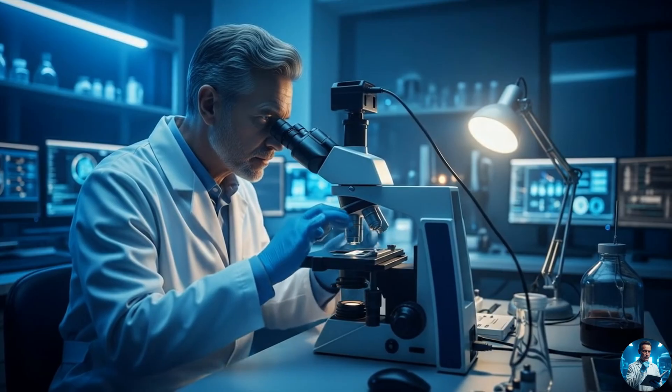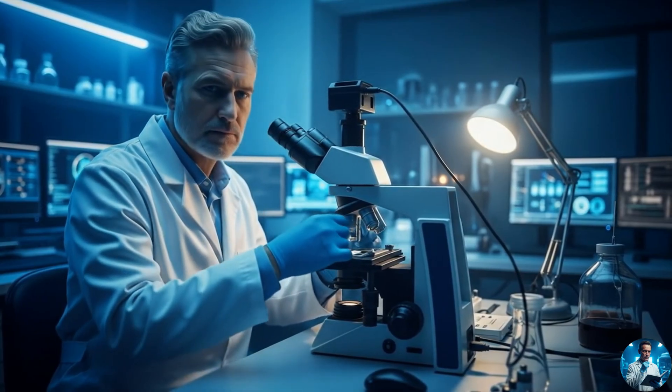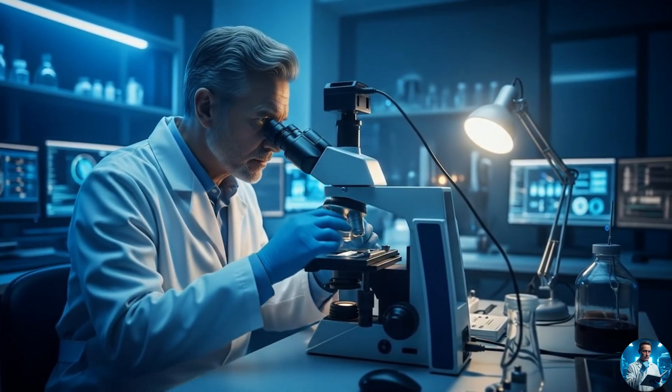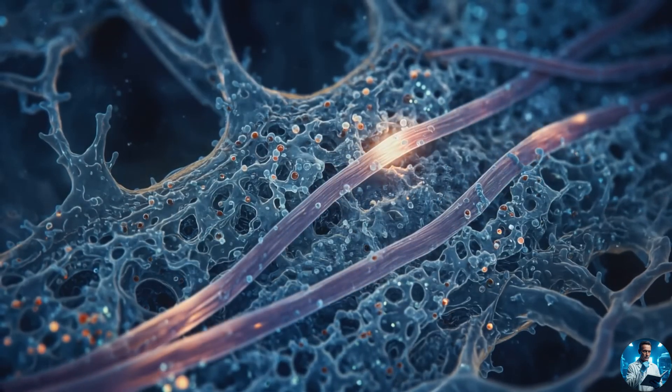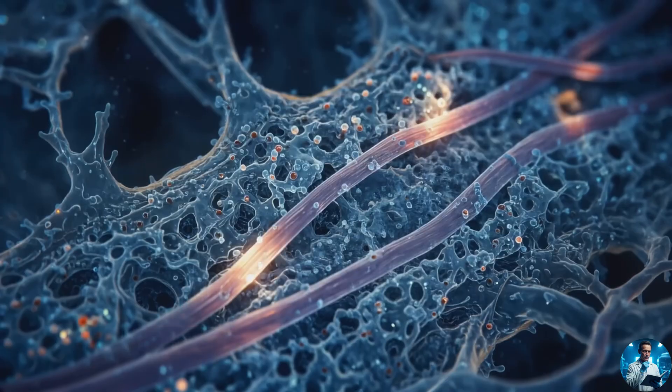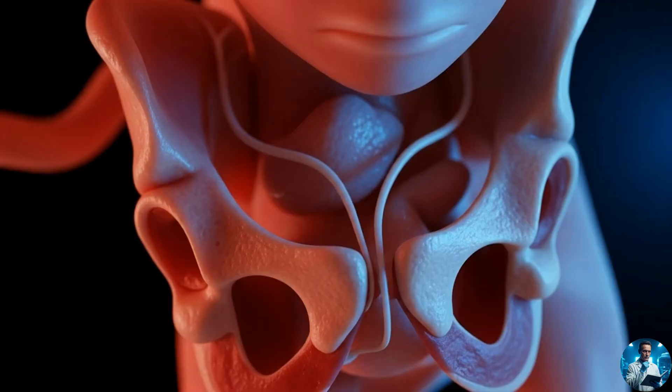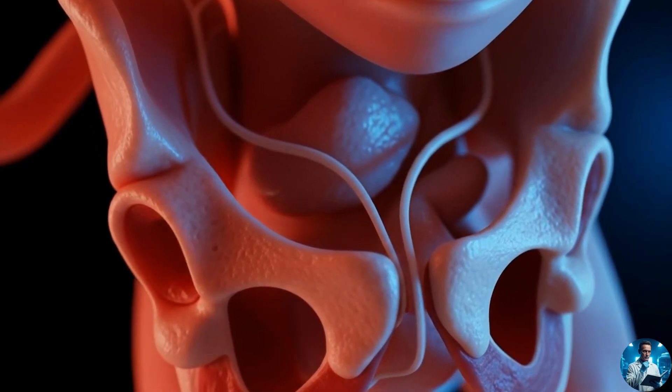So what is the hymen actually composed of? Under a microscope we find non-keratinized, stratified squamous epithelium. Beneath that lies the lamina propria with microcapillaries, elastic fibers, and connective tissue matrix.